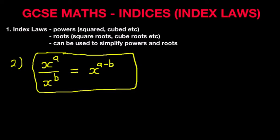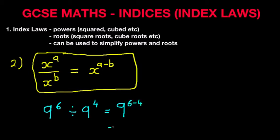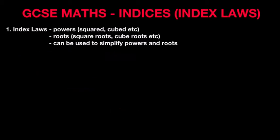Let's work through an example. Suppose we have 9 to the power of 6 divided by 9 to the power of 4. Using our rule, this is simply 9 to the power of 6 minus 4, and the answer is 9 squared. It's very simple.